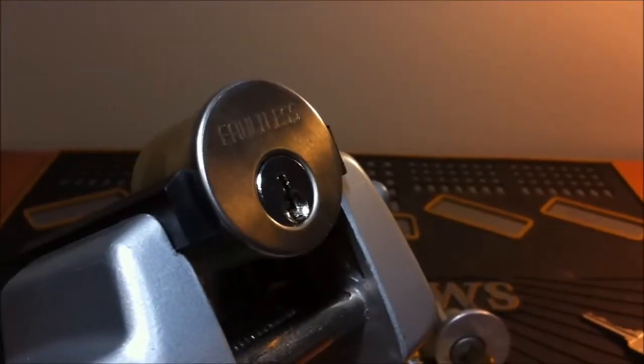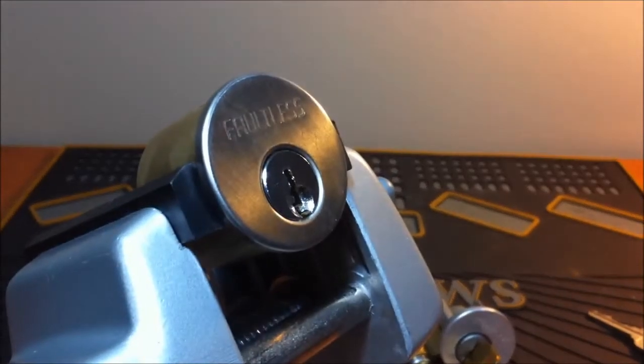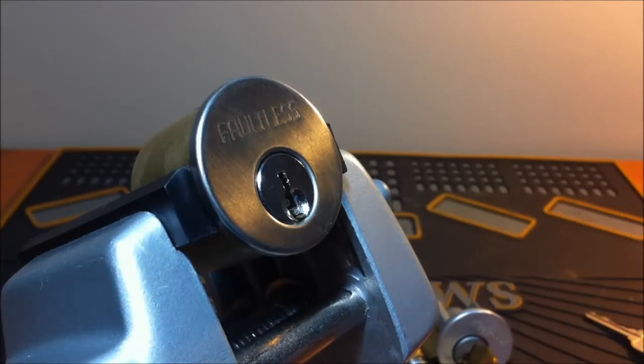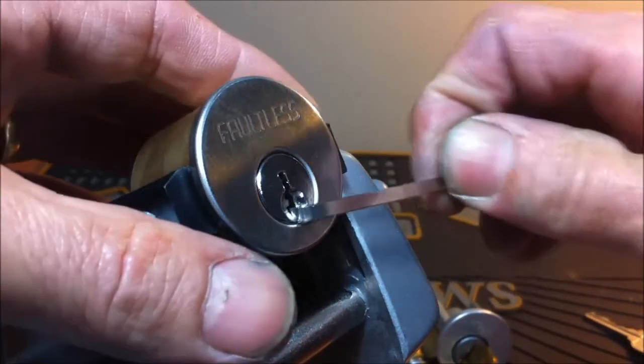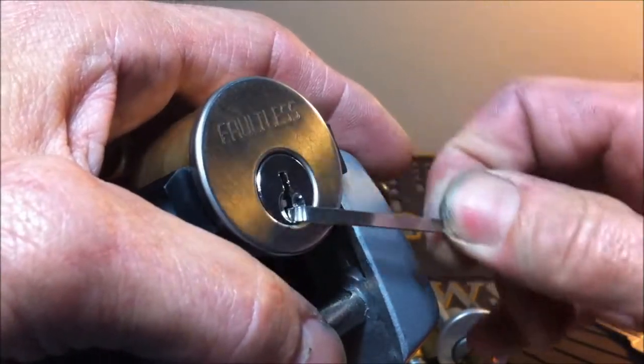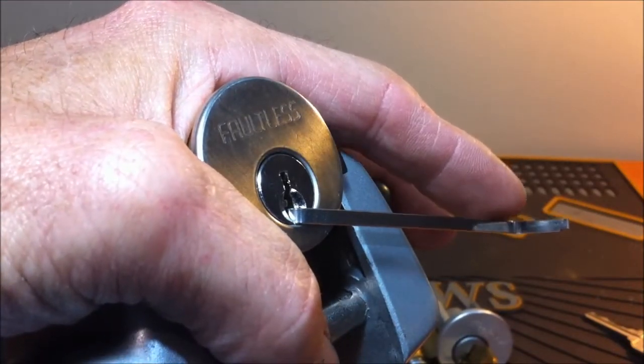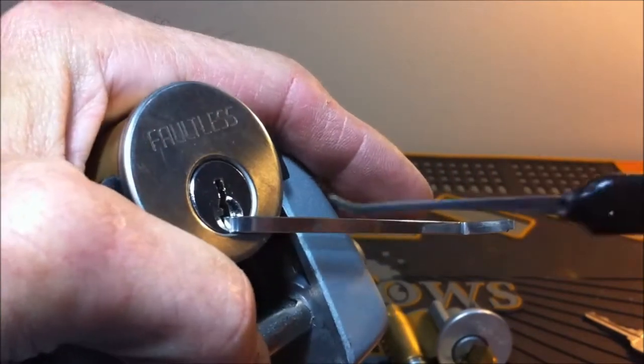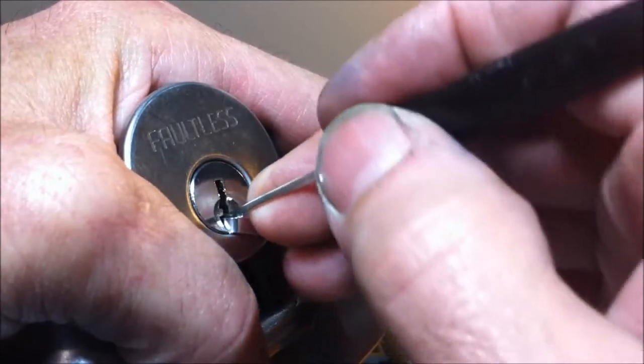Yeah, it's a Quickset keyway. I think I could use bottom of the keyway because I got to come off this ledge anyways. So we'll use the bottom of the keyway and I think I will start with my Sparrows short hook, see if we get into it. If I can, I'll change picks.